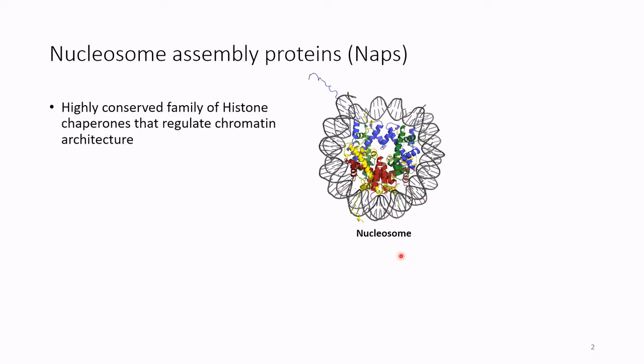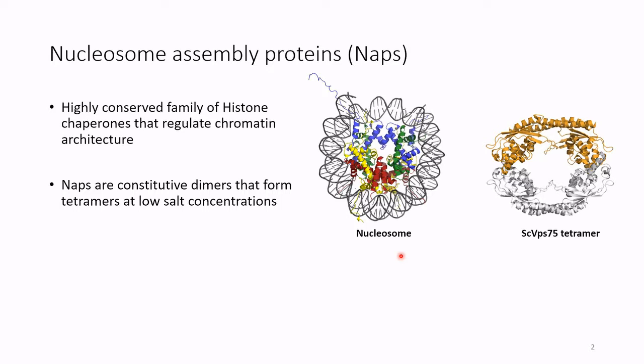Studying NAP proteins can be a little bit challenging because they're constitutive dimers that are known to form tetramers in a salt-dependent manner. Shown here is the crystal structure of one NAP protein from yeast called VPS75. In orange, we can see one constitutive homodimer, and in white, we can see another constitutive homodimer. You can see in the crystal packing that they form a tetramer with a ring-like structure. This dimer-tetramer equilibrium is dynamic and depends on the concentration of salt in solution as well as the concentration of protein.